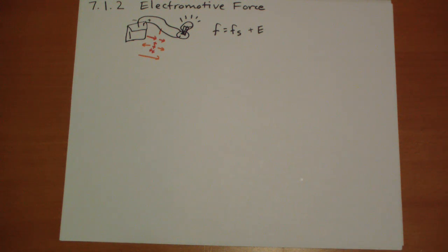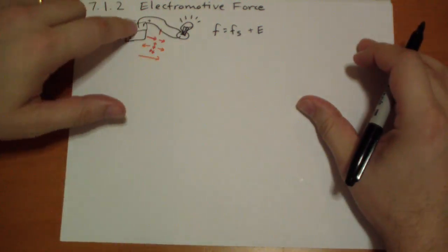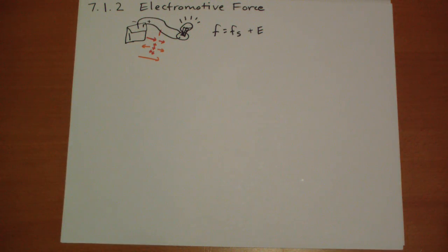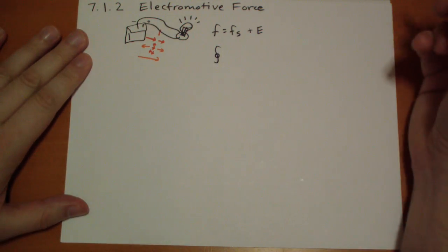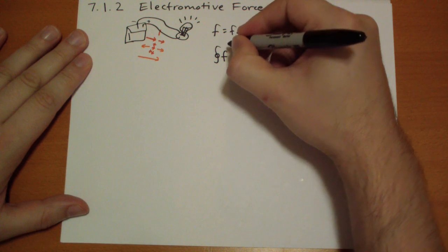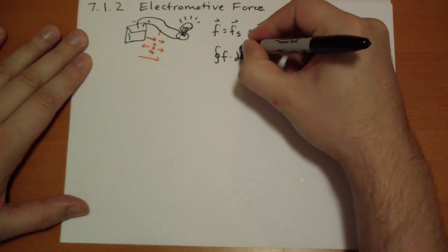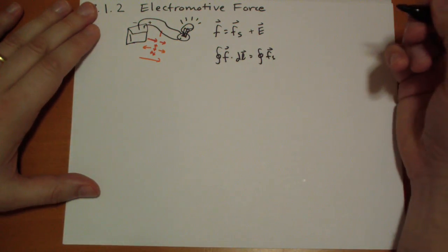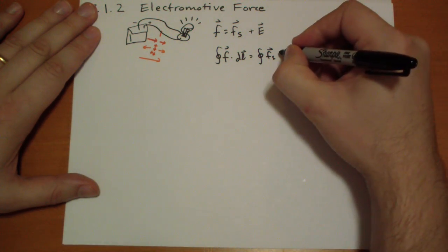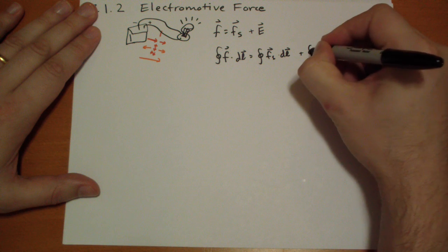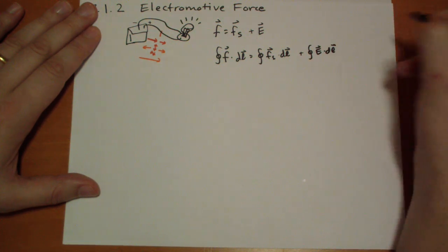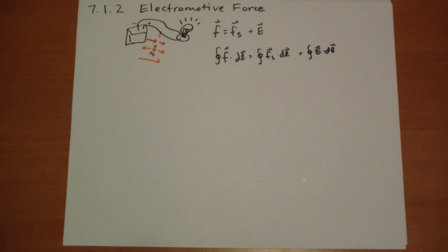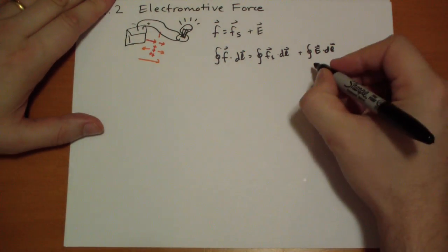So when we go to integrate around the circuit, so if we go around the circuit, the end result, we take the integral, the path integral of the total force, and this is all vectors of course, dot dl. And that's going to be equal to the path integral of the source force dot dl, plus the electric field dl vector. And what happens is the electric field, any path integral, the total electric field throughout this loop is always going to be equal to zero, so this is always going to be equal to zero.